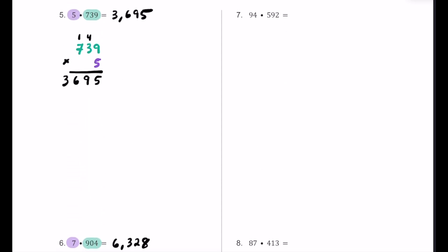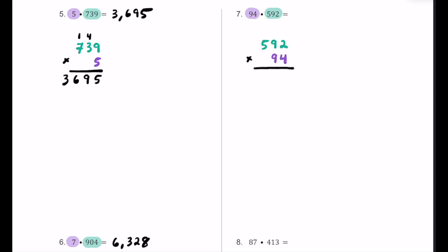Here's number 7. We have 94 multiplied by 592. Now 592 has 3 digits and 94 only has 2 digits, so 592 goes on top and we multiply by 94 — put the 9 underneath the 9 in the tens place and the 4 underneath the 2 in the ones place. Starting with 4: 4 times 2 equals 8, put that in the ones place. Then 4 times 9 is 36 — 6 in the tens place, carry the 3. After that, 4 times 5 is 20 plus 3 is 23 — 3 in the hundreds place, 2 in the thousands place. We're done with this 4.